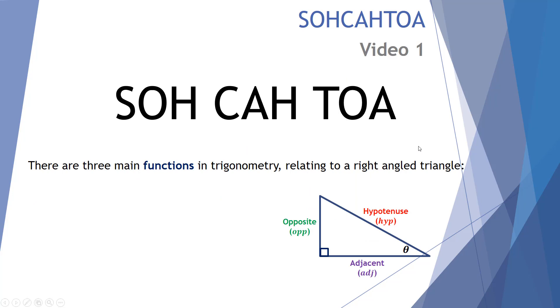Okay, let's see if we can make some sense out of these SOHCAHTOA statements. There are three main functions in trigonometry that relate to a right angle triangle. Let's investigate these. The first is sine, there's a function called sine. There's another function called cosine, and a third and final one called tangent.